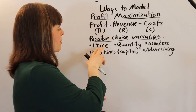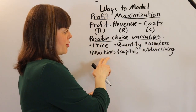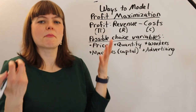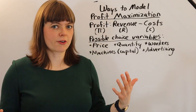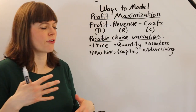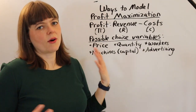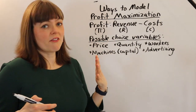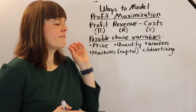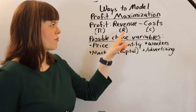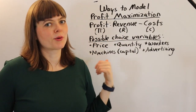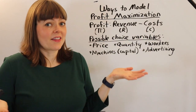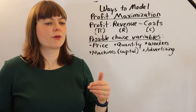Choice variables include price, quantity, or some type of input — which might be labor, capital, or some other input. Advertising is another example, reminding us that there are lots of decisions firms make, many of them strategic. If you're ever asked to build a profit maximization model from scratch, the simplest way is to have revenue as a function of your choice variable minus costs as a function of your choice variable.